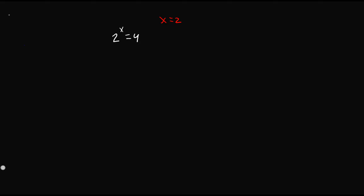But how would you show your work if you were asked to find x and show your work? Well, we see 4 is the same thing as 2 squared, and that means we could replace 4 with 2 squared, giving us 2 to the power of x is equal to 2 to the power of 2. Since we already have the same base, we can just look at the exponents, and we see that x is equal to 2.